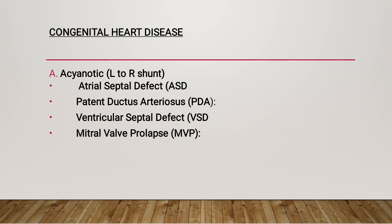Patent ductus arteriosus (PDA) is identified by a continuous murmur at the upper left sternal border. Most patients with PDA will tolerate pregnancy well. Pulmonary hypertension may cause maternal death. Surgical correction during pregnancy can be performed provided there is no pulmonary hypertension. Epidural analgesia is better avoided to minimize shunt reversal due to systemic hypotension. Fetal loss may be up to 7%, and there is a 4% chance that the child will suffer from the same abnormality. Endocarditis prophylaxis should be given.